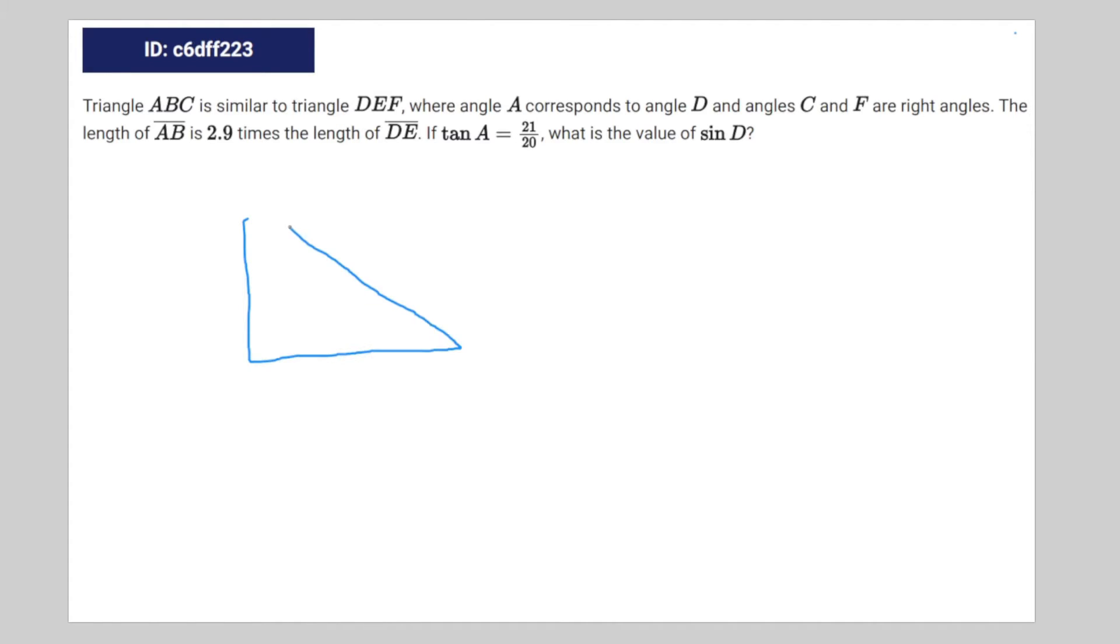So I'm going to start off by drawing an image. A corresponds to D, and C and F are right angles. Ergo, B corresponds to E.